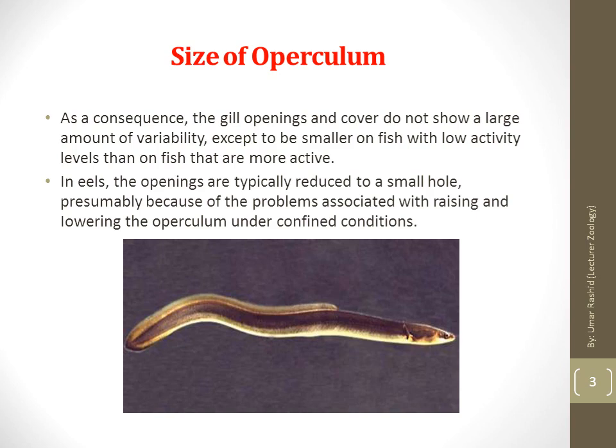You can distinguish eels from other fishes because their body is long and elongated, and sometimes laterally compressed. In eels, the gill openings are well developed, leading to large interbranchial slits.